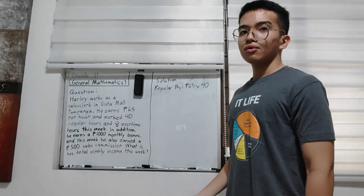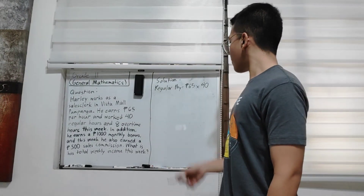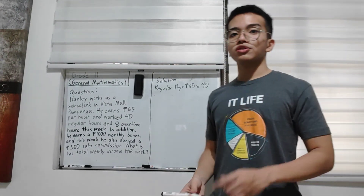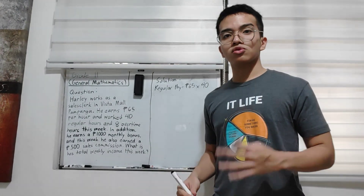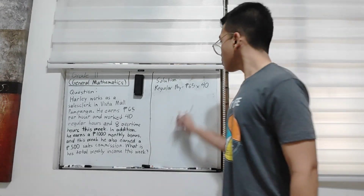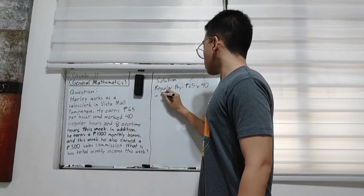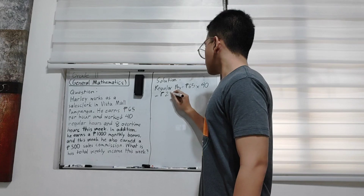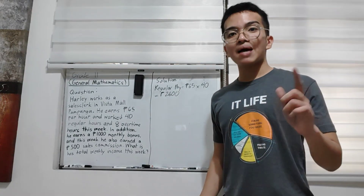So we multiply 65 by 40. You can use your calculator or solve it manually. This gives us the regular pay of 2,600 pesos.